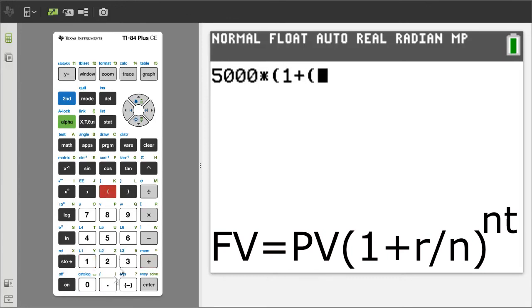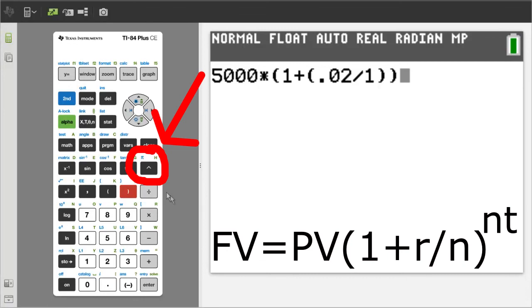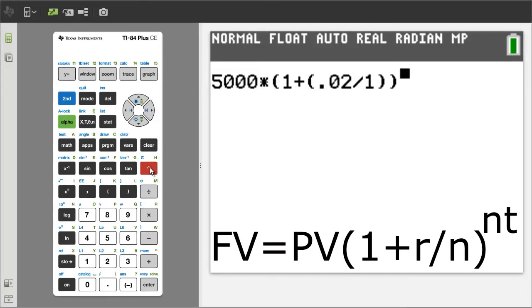1 plus open parenthesis, .02 divided by 1, close parenthesis, another close parenthesis. Now we have to put the outside parenthesis to the NT power. Press this caret symbol here. This caret symbol represents the power sign.